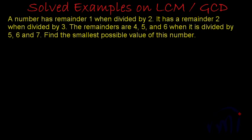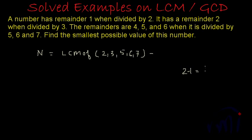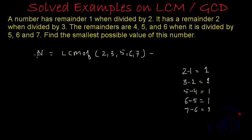Using this result, we can find the smallest possible such number. The value of N will be equal to the LCM of 2, 3, 5, 6, 7 minus the difference. The difference is: 2 minus 1 is 1; divided by 3 remainder is 2, difference is 1; divisor 5 remainder 4, difference is 1; divisor 6 remainder 5, difference is 1; divisor 7 remainder 6, difference is 1. So N = LCM(2, 3, 5, 6, 7) minus 1, where 1 is the common difference between all divisors and remainders.